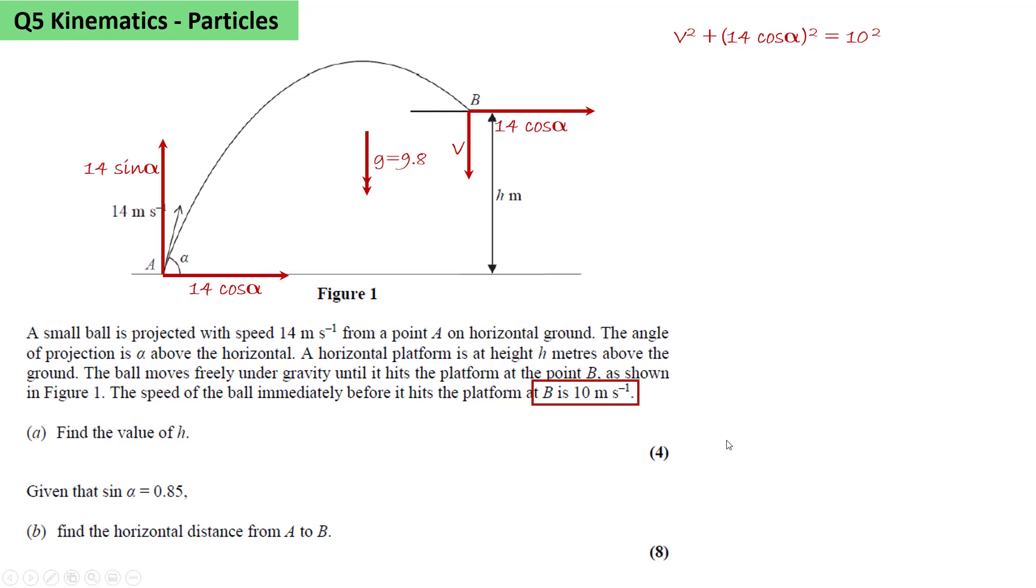Now, the next thing that we do is consider the vertical motion and use V squared equals U squared plus 2AS. We know V squared is going to be 10 squared minus 14 cos alpha all squared from the first equation. The U squared will be 14 sin alpha squared. The acceleration is minus G, and so the 2AS becomes minus 2GH.